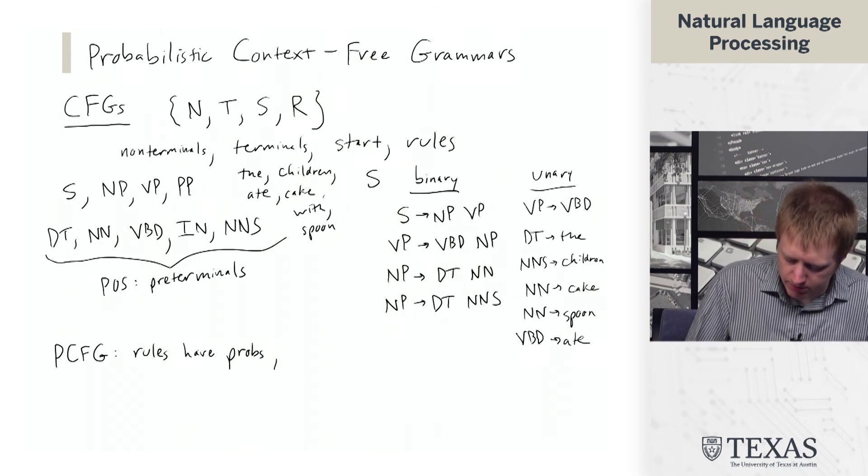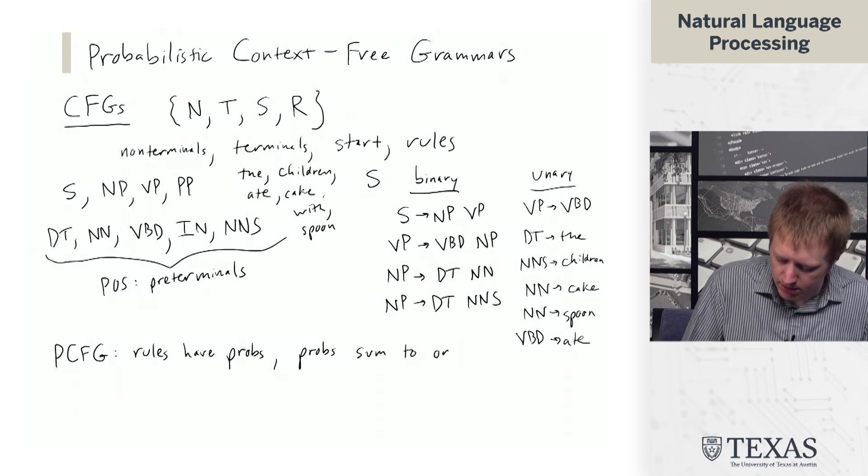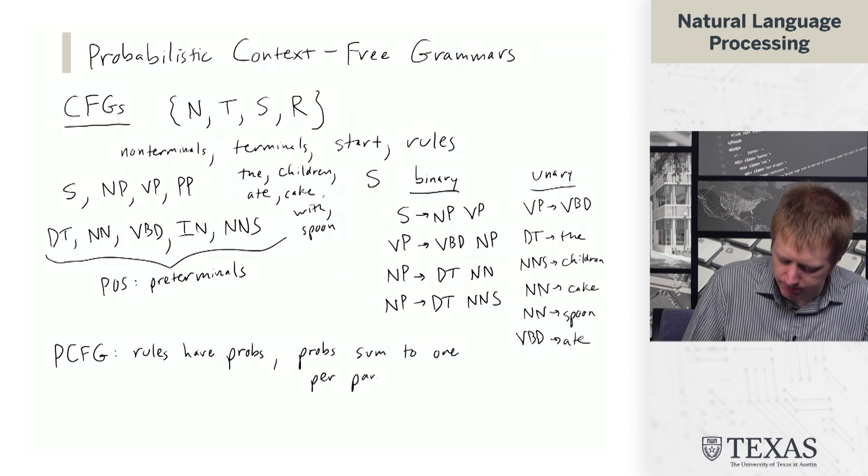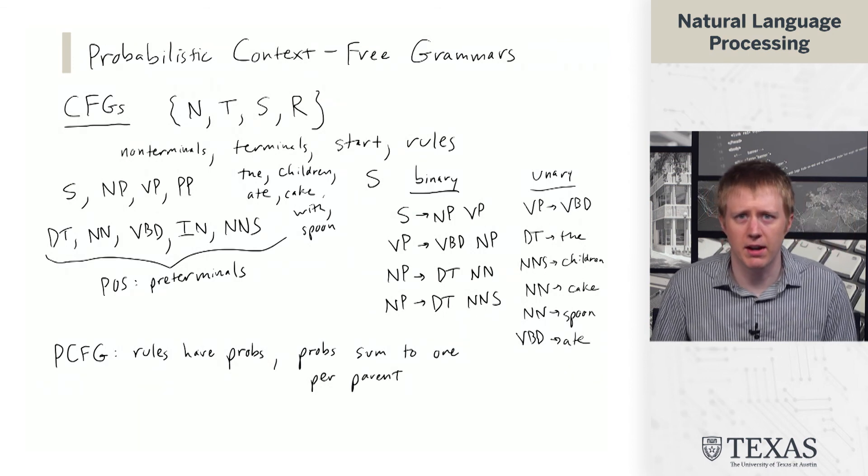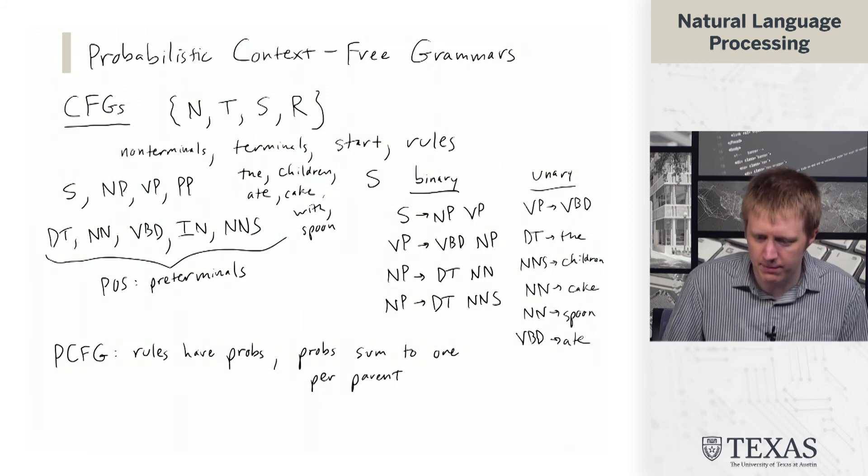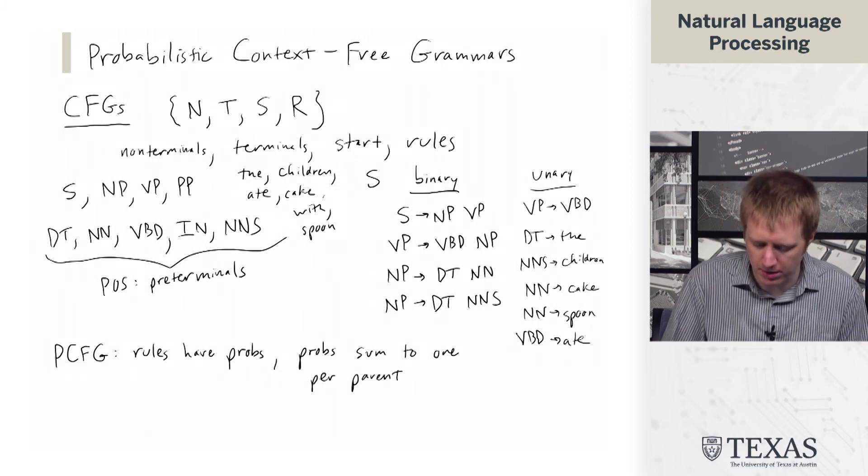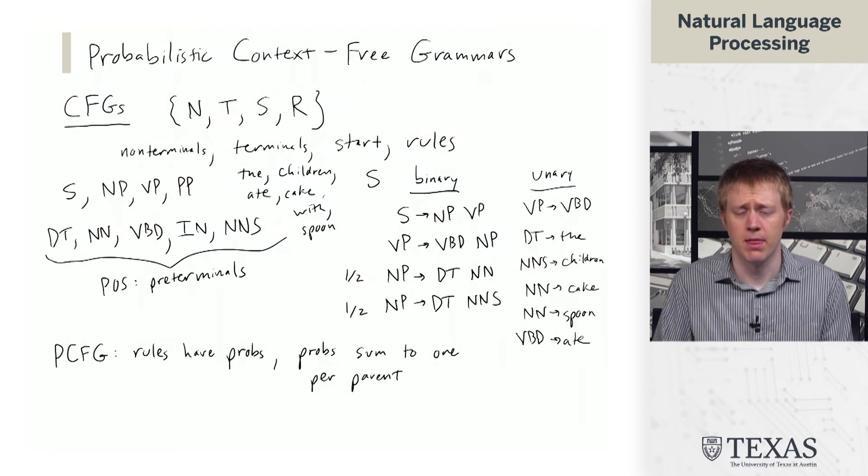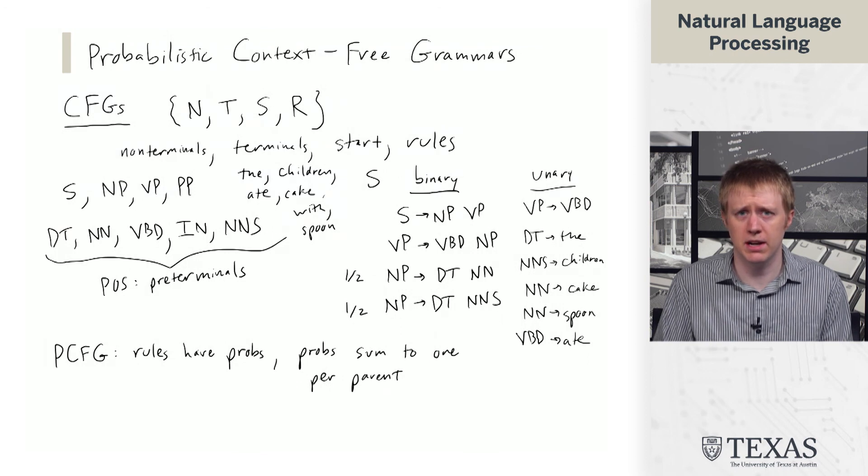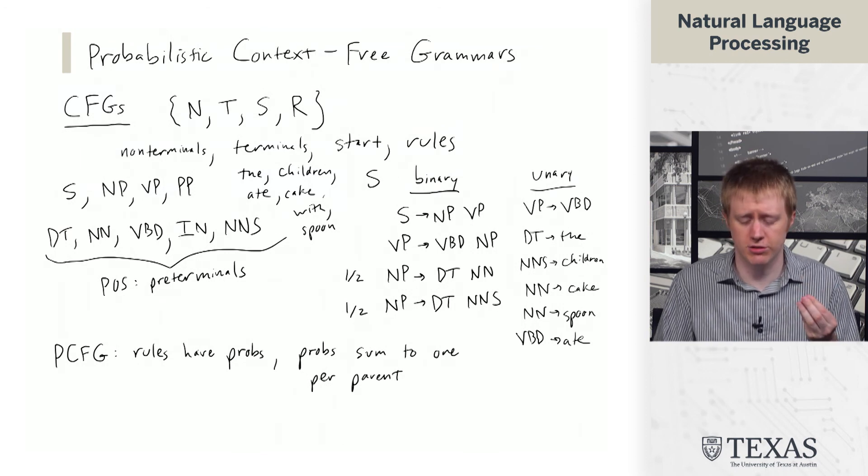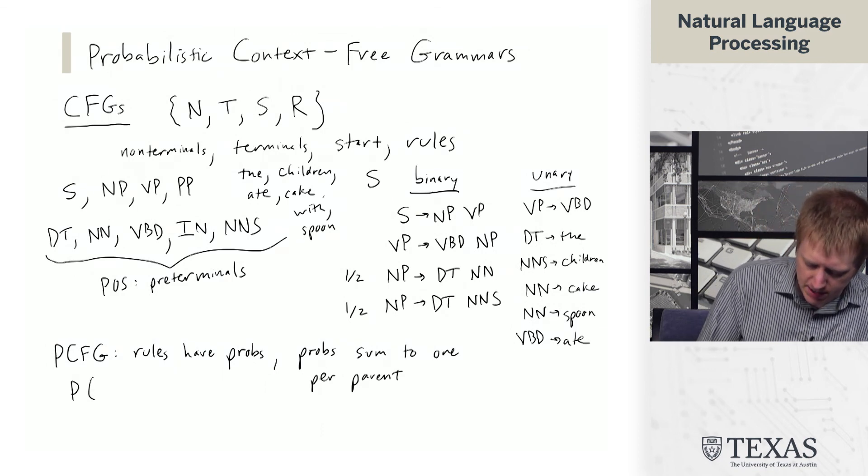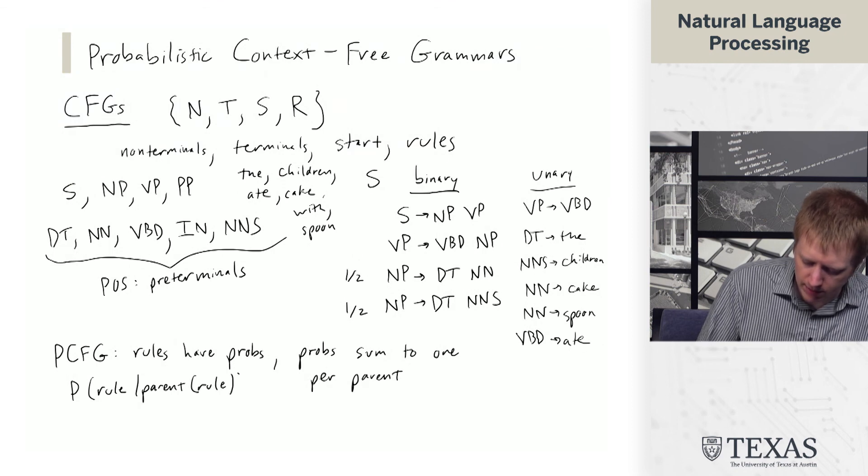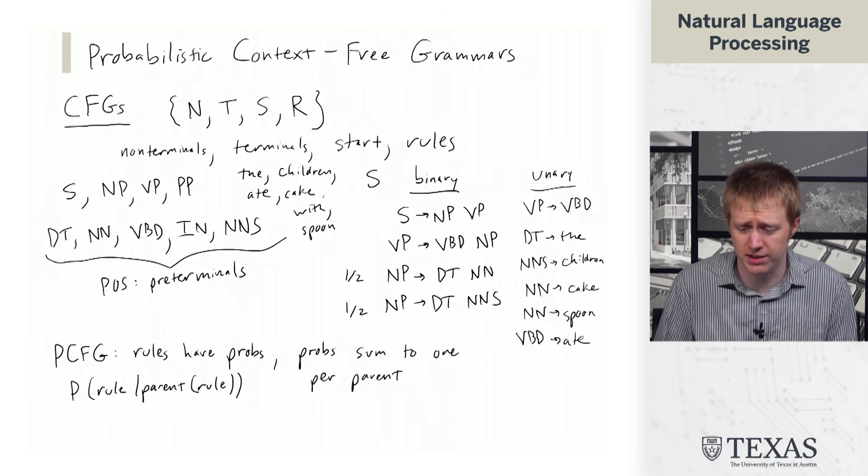The probabilities sum to one per parent. What I mean is if we think about attaching probabilities to these rules above, maybe we have probability one-half, one-half associated with these two rules about NP. These are constrained to sum to one because we need a probability distribution, basically P of rule given parent of rule. All the rules that rewrite from NP have to sum to one.